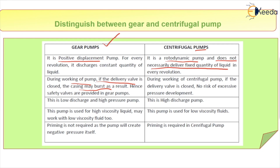In the case of a centrifugal pump, it is not necessary to worry if the delivery valve is closed, because there is no risk of excessive pressure development — the liquid simply recirculates inside. Also, the gear pump is a low discharge, high pressure pump, whereas the centrifugal pump is a high discharge pump. Comparatively, the centrifugal pump gives higher discharge.